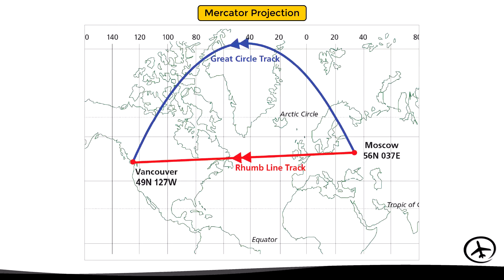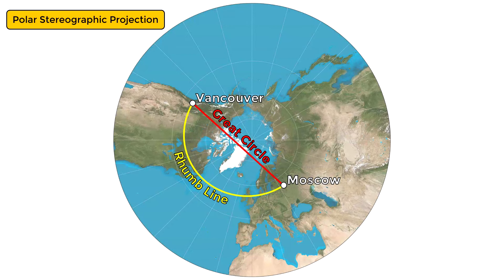On the other hand, in a Mercator projection a rhumb line is represented as a straight line. However, if we look at a map with a polar stereographic projection — where the meridians diverge from the central point — a great circle is represented as a straight line, while a rhumb line is represented as a curved line.